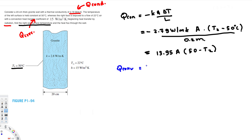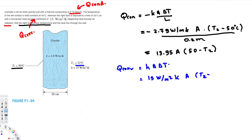Now let's create the equation for convection. Q convection is given by H times A times delta T, where H is the heat transfer coefficient, A is surface area, and delta T is T surface minus T surrounding. T surface is T2, which is what we are trying to find. H is given as 15 watts per meter squared Kelvin, so Q convection equals 15 times A times (T2 minus 22 degrees Celsius).